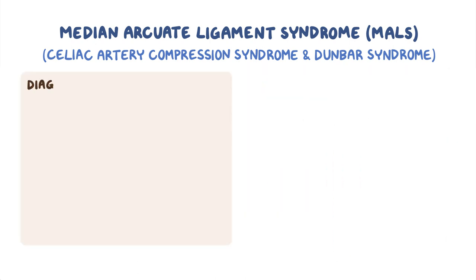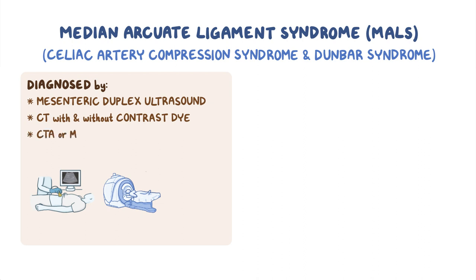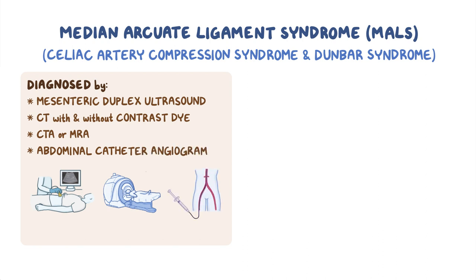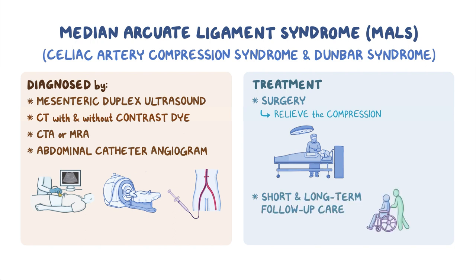MALS is diagnosed by clinical symptoms and the exclusion of other causes of similar symptoms. Specific diagnostic tests include a mesenteric duplex ultrasound, CT scan with and without contrast dye, CTA, MRA, or with the gold standard, an abdominal catheter angiogram. Treatment includes surgery to relieve the compression, and short and long-term follow-up care is recommended for continuity of care.